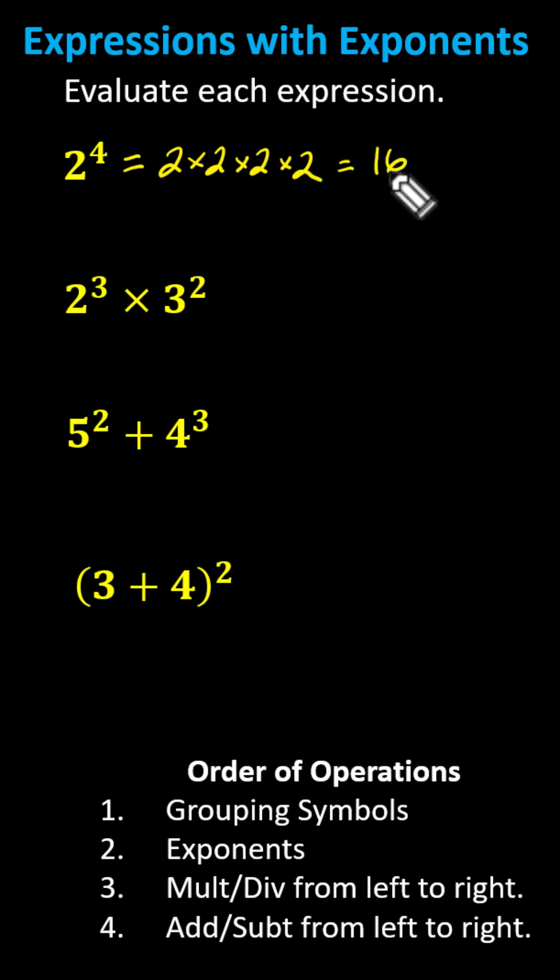Next, we have 2^3 × 3^2. Following the order of operations, we evaluate the exponents first, where 2^3 = 2×2×2 = 8, and 3^2 = 3×3 = 9. The expression simplifies to 8×9 = 72.